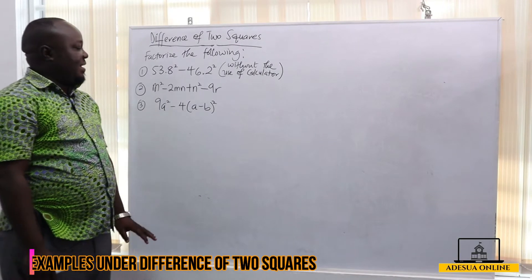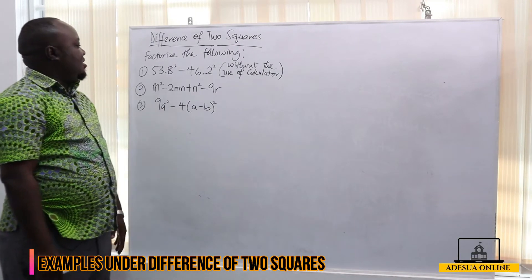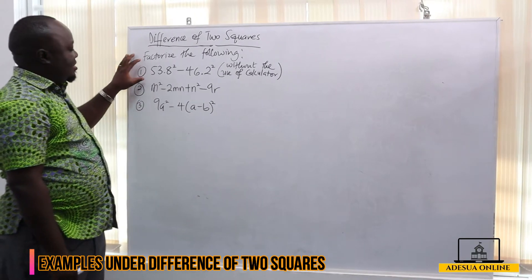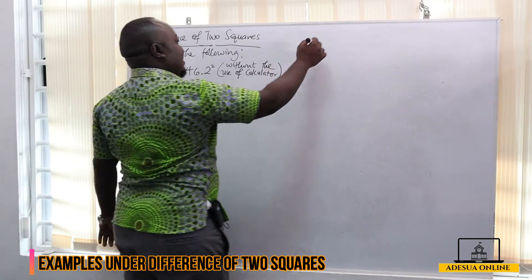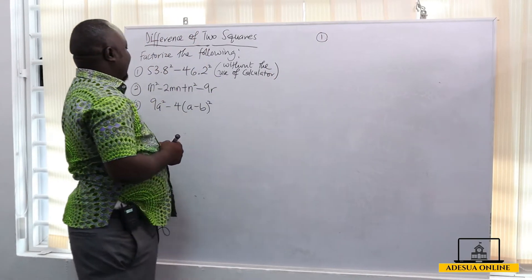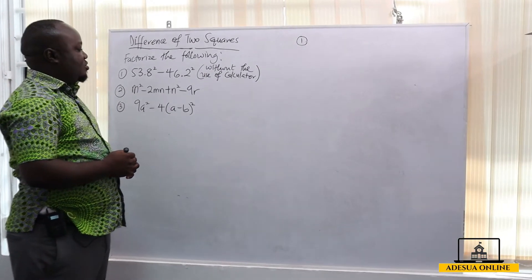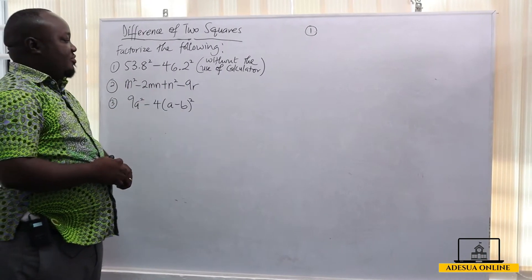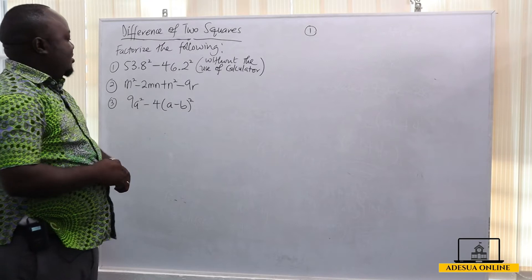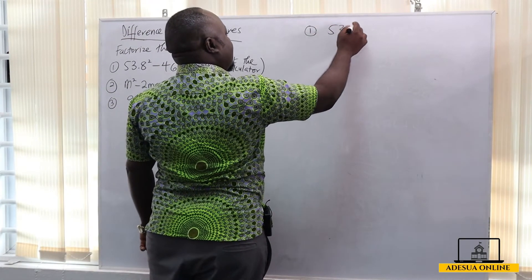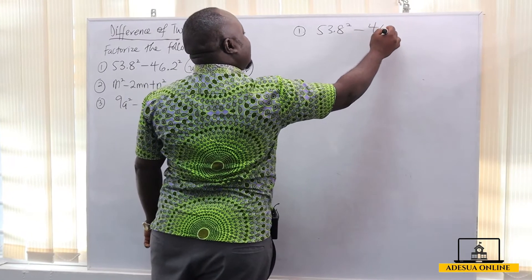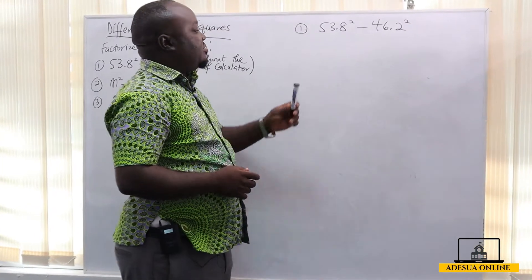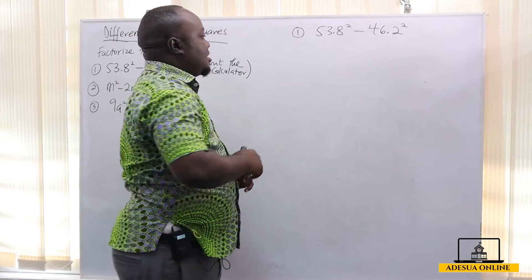We are going to continue our lesson by trying to solve these examples. We have been asked to factorize the following completely. Number one says 53.8 all squared minus 46.2 all squared. We are asked to factorize this without the use of a calculator, which means we have to use the difference of two squares.